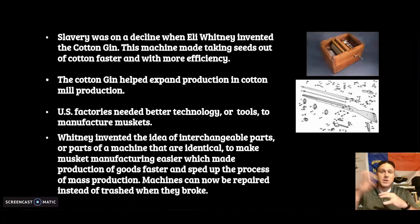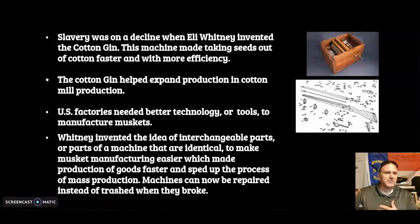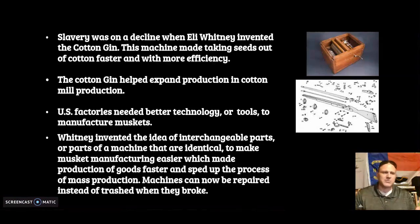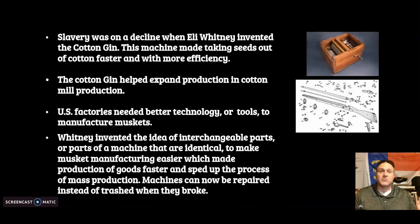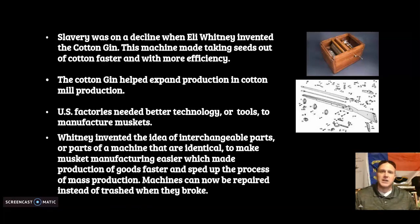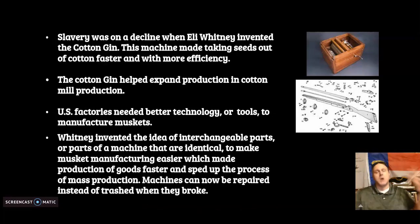You would think that if you can process cotton quicker, you don't need as many slaves — if two slaves could now do 50 to 100 pounds in 10 hours. However, because of the cotton gin, slave owners stopped planting everything else and only started planting cotton. Plantations became huge cotton-only operations, so they actually needed more slaves. The expansion of cotton production in the South exploded.